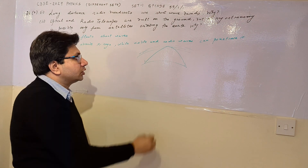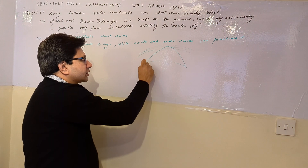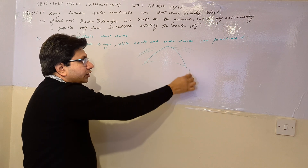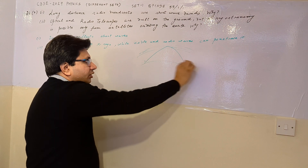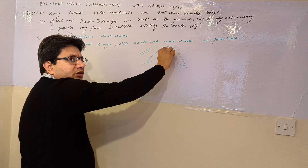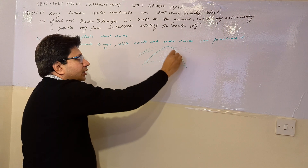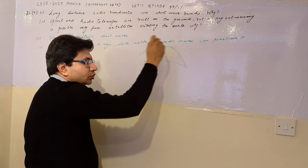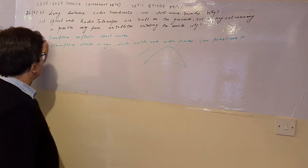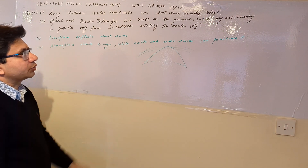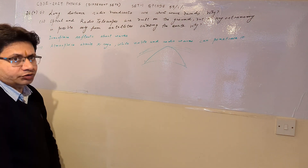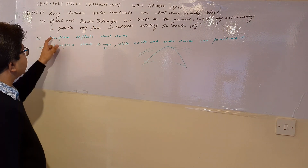We cannot directly send the signal from the transmitting end to the receiving end because of the curved nature of the earth. The signal has to go from the transmitter up to the ionosphere, and from the ionosphere it reflects back to the receiving station. The ionosphere reflects the shortwave — this is the main reason that long distance radio broadcasts use the shortwave bands.